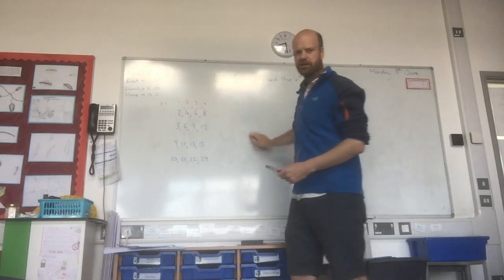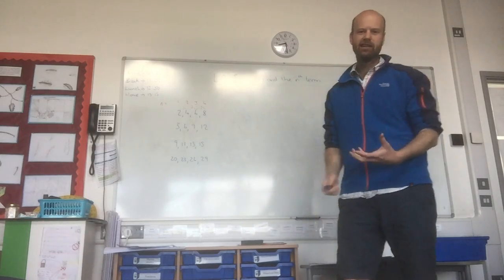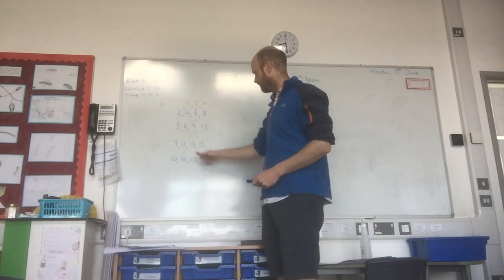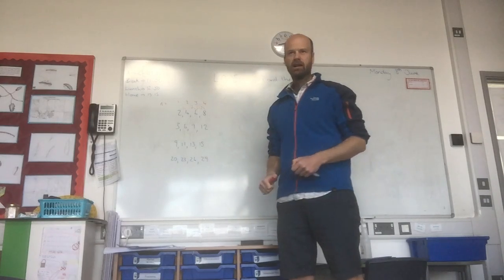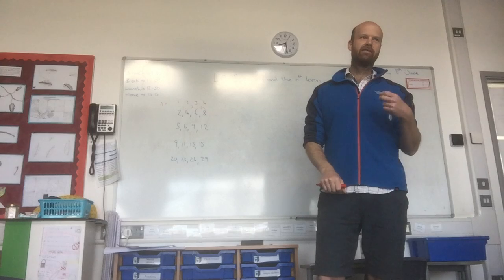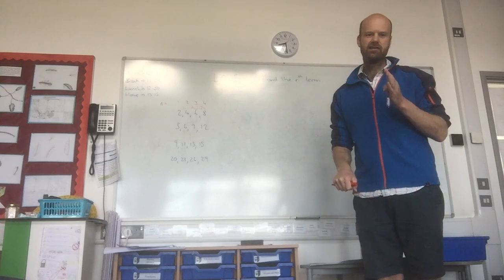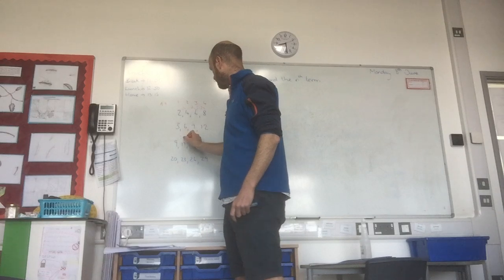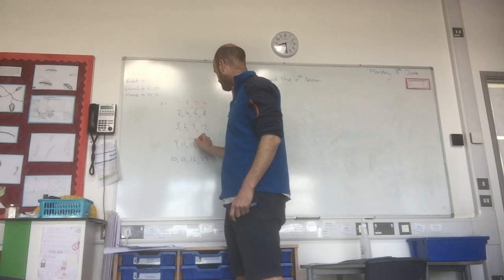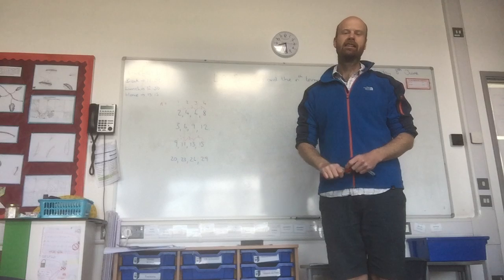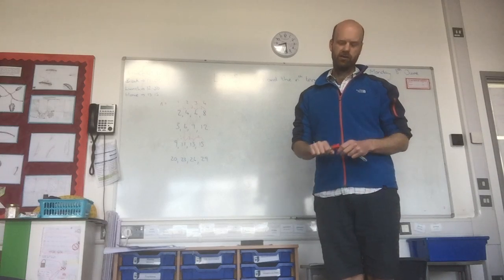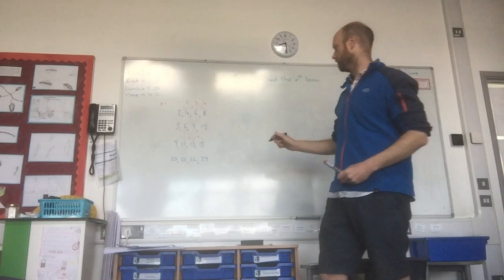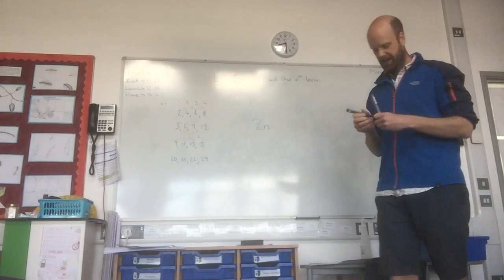So those first two are quite straightforward. It gets a little bit more complicated, but not really, for the ones below. We've got 9, 11, 13, and 15. And just like our very first sequence, the difference between those numbers is just 2. And all that means is that there's something here to do with the 2 times table, which means somewhere in our formula we would find, again, 2n.